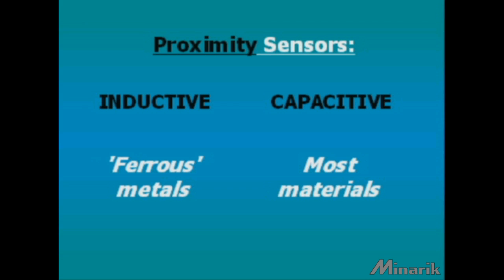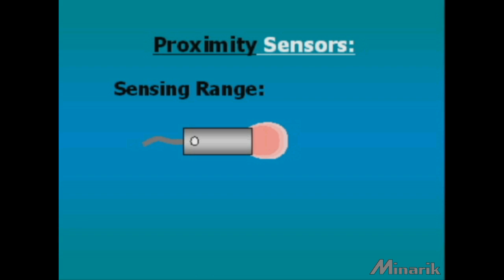Proximity sensors come in either inductive or capacitive. Inductive is the most common and is designed to sense ferrous or metallic objects. Capacitive can sense virtually any material. Sensing range is often limited to approximately the diameter of the sensing face, commonly less than an inch.